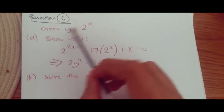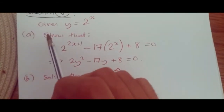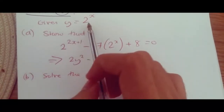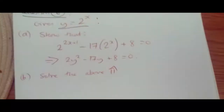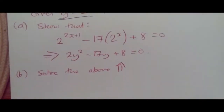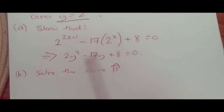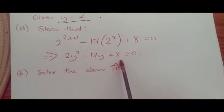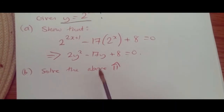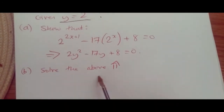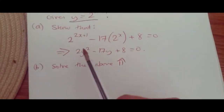Question 6. Here we're working with indices and we're told that given y equals 2 to the power x — take note of this — we need to show that this equation results in this one here. We'll get to part b in a second, and in part b we need to solve it. So how do we do this?